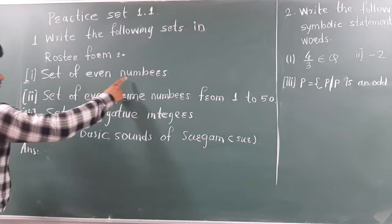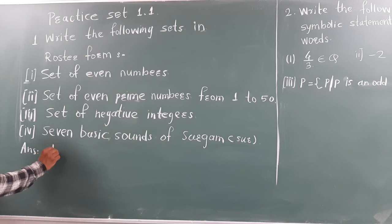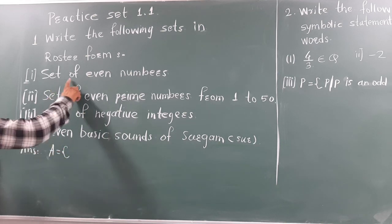The first is set of even numbers. We can take any alphabets from A to Z, so we have to take here A.